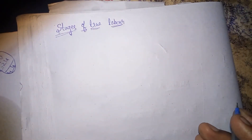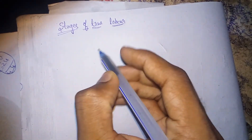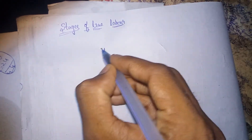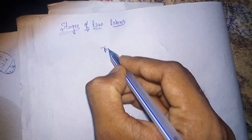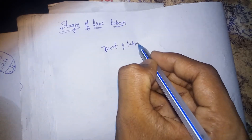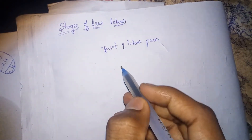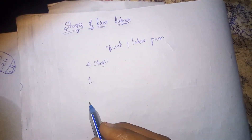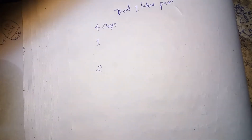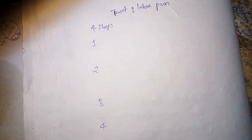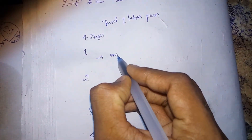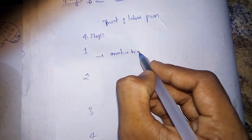Let's discuss the stages of true labor. True labor begins with the onset of labor pains. There are mainly four stages: stage one, stage two, stage three, and stage four.